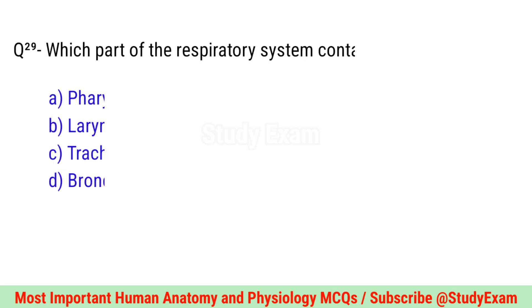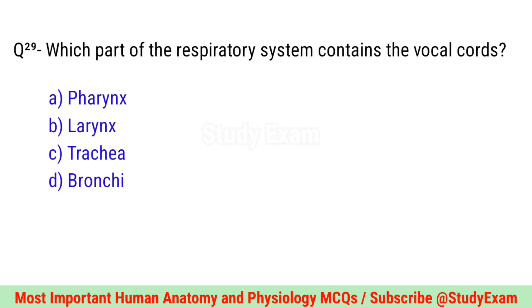Question number twenty-nine. Which part of the respiratory system contains the vocal cords? Correct option is B. Larynx.